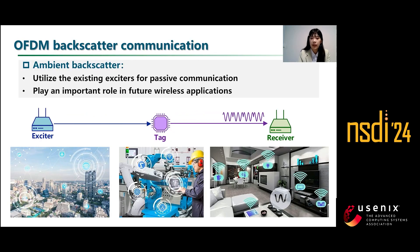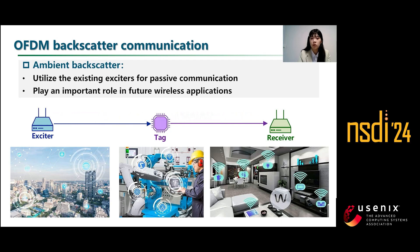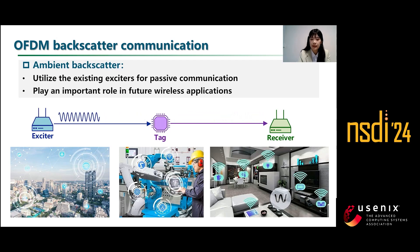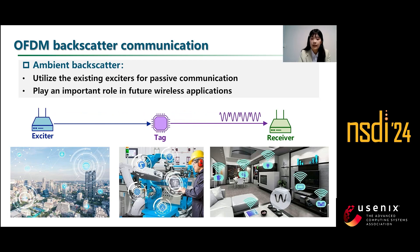In the past few years, the proliferation of wireless applications intensifies the importance of ultra-low-power communication techniques, such as ambient backscatter communication. This system contains three parts: an ambient exciter referred to as Alice, a passive tag, and a backscatter receiver referred to as Bob. The tag uses the ambient signal from Alice as a carrier to communicate with Bob by changing the reflection coefficient to embed its data. As the system does not consume power to generate any dedicated carrier, it is low power and suitable for many applications such as smart home and smart city.